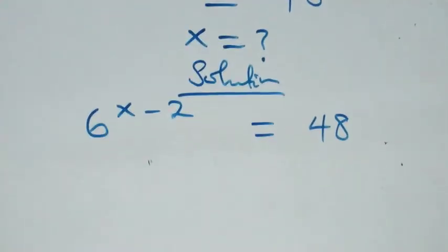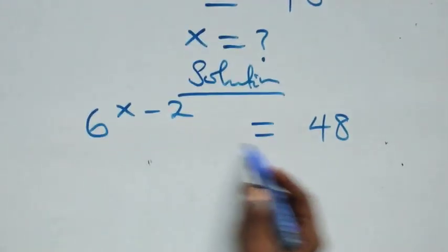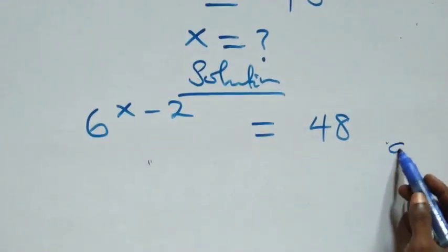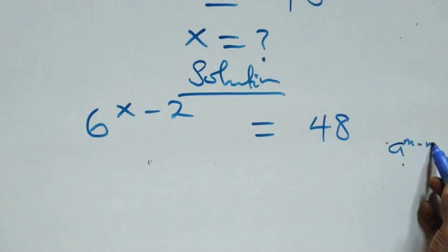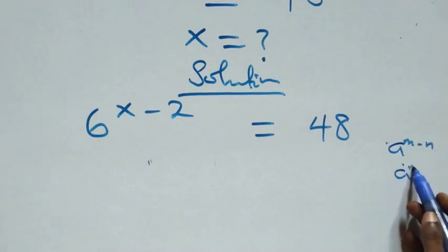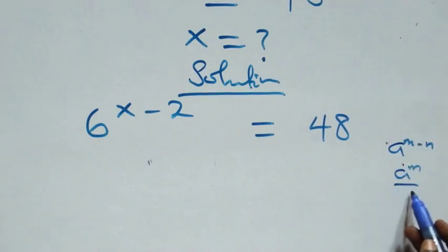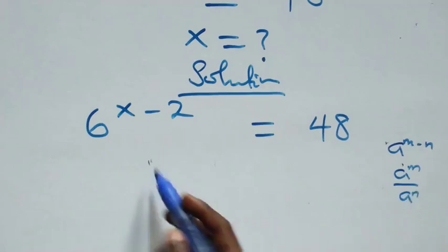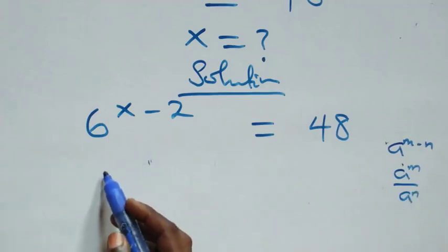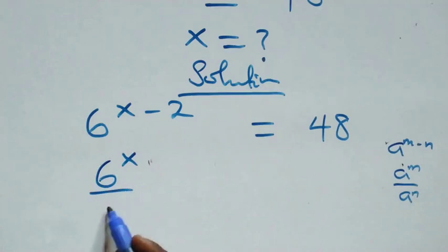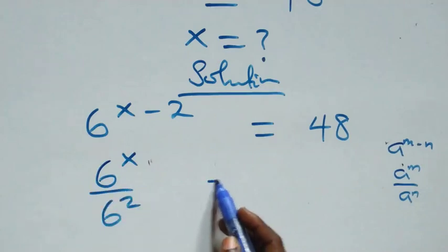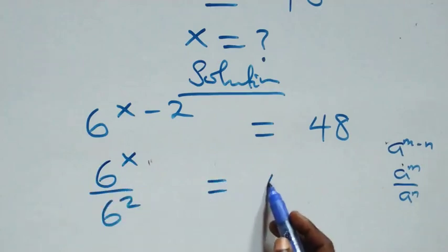From here, this follows: a raised to power n minus m is the same thing as a raised to power n over a raised to power m. So we have six raised to power x over six squared equals forty-eight.